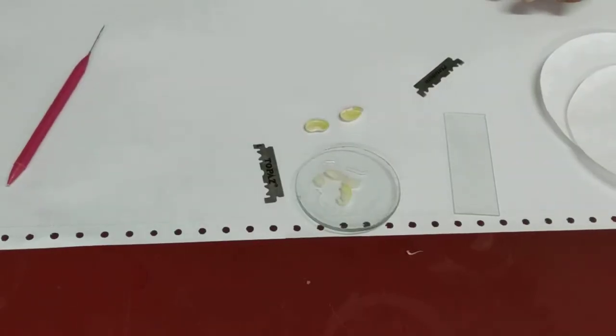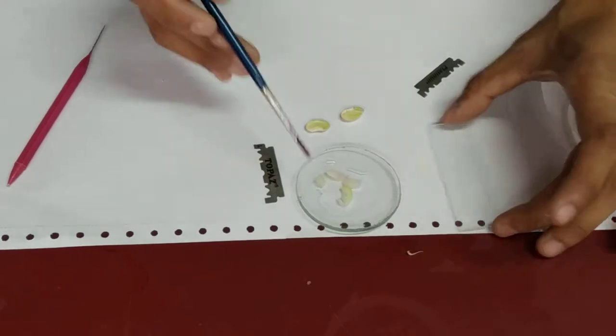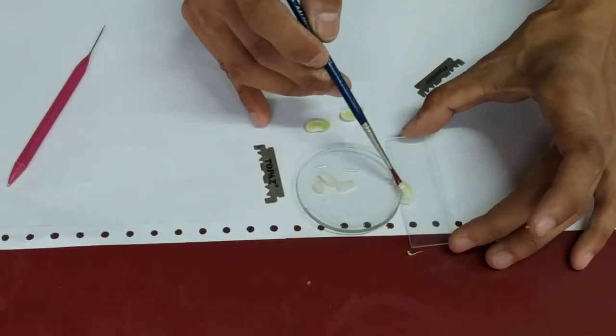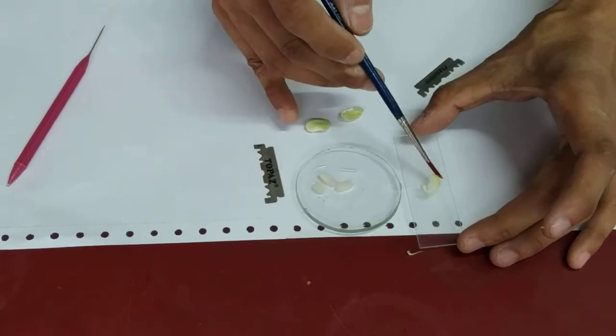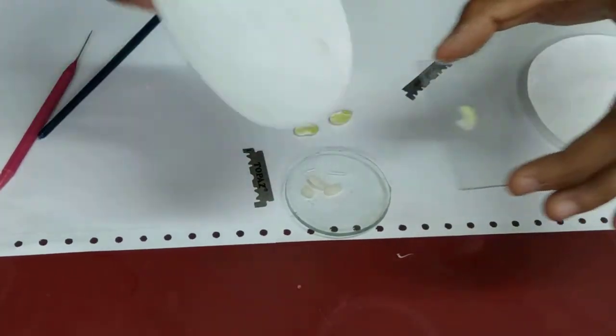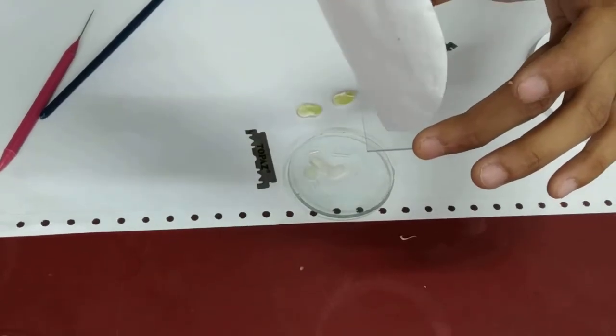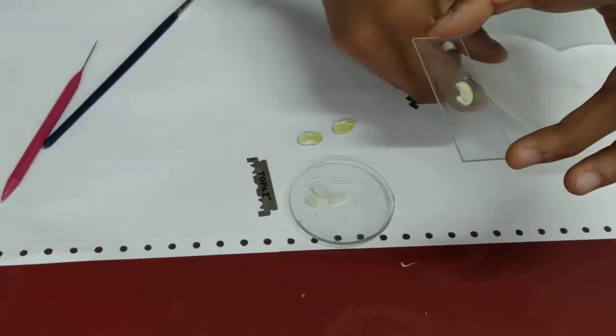After cutting many sections, transfer one section onto a glass slide. Again, same thing, dry it with the filter paper and then observe under the microscope.